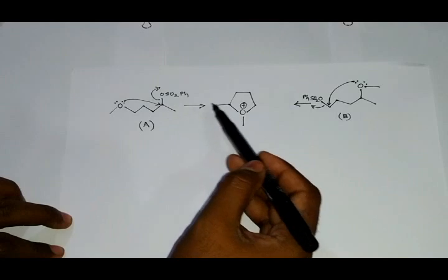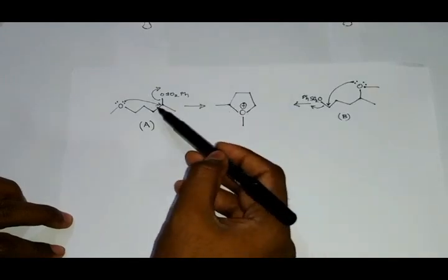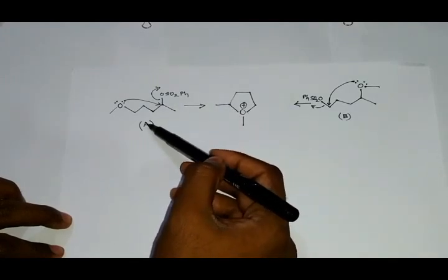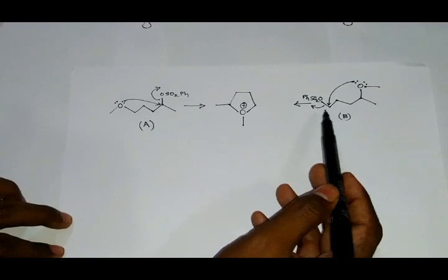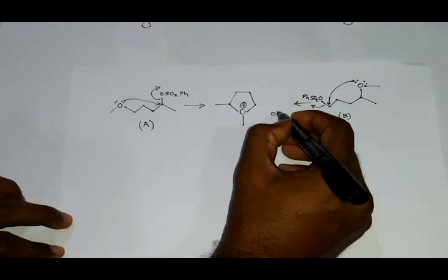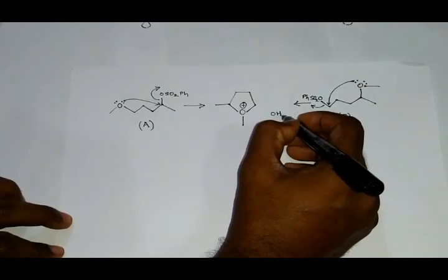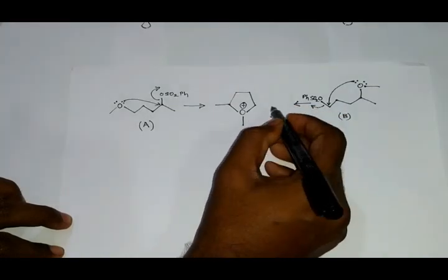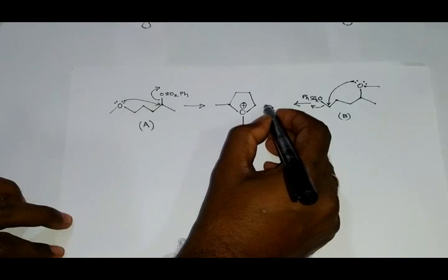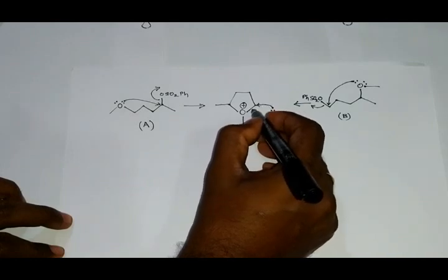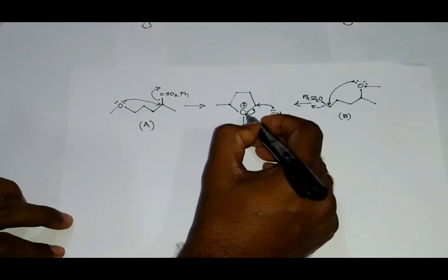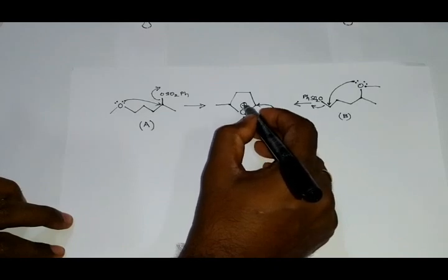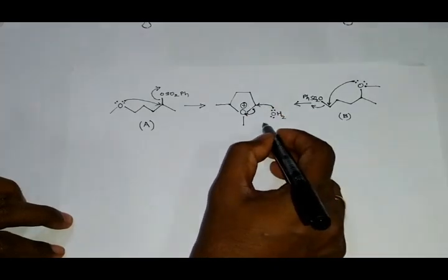The intermediate over here is common for both reactants A and B. The water molecule, the lone pair of electrons on this oxygen, can attack here and this bond will come onto the oxygen because it is having a positive charge, leading to the formation of product.